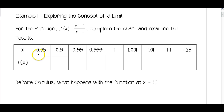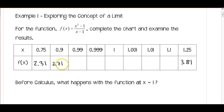So for 0.75, I've got 2.31, and then for 1.25, this is 3.81. Going back to 0.9, this should be 2.71, and for 1.1, I have 3.31. These values are arbitrary, but you notice that they're getting closer and closer to the value of 1.